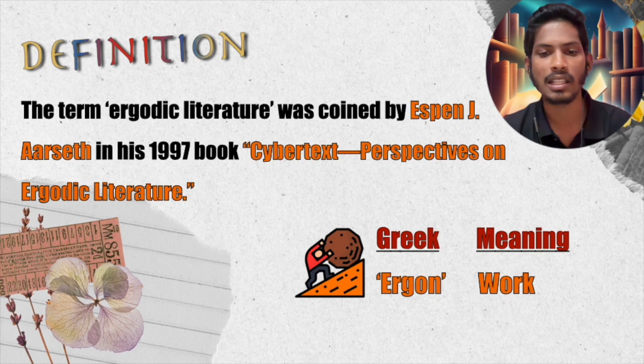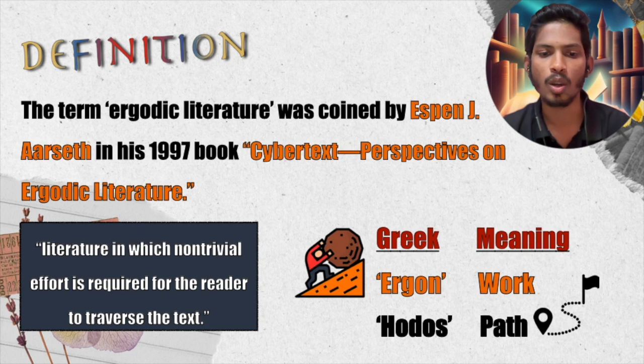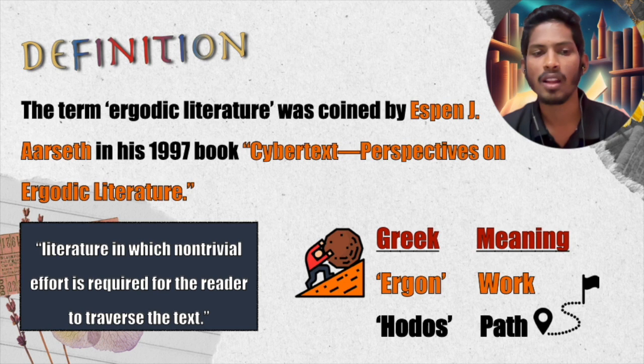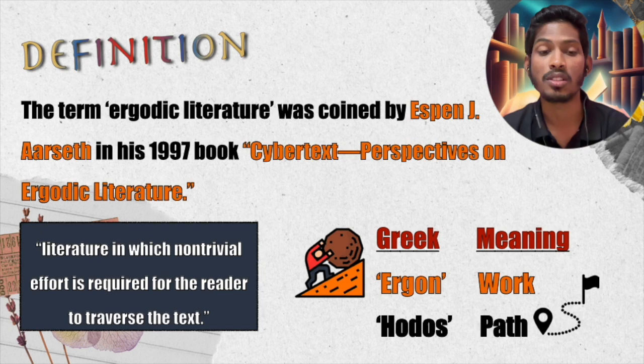The term ergodic literature was coined by Espen Aarseth in his 1997 book Cybertext: Perspectives on Ergodic Literature. The word comes from the Greek words ergon, meaning work, and hodos, meaning path. Ergodic literature is that which requires the reader to work their way through the text following different paths or rules. Aarseth defined it as literature in which non-trivial effort is required for the reader to traverse the text — it requires you to work to find your path inside the text.